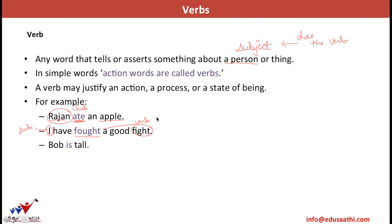As we just said, a verb may tell you or justify the state of being. For example, 'Bob is tall.' Bob is the subject because we are talking about Bob. Here we do not see any action taking place — Bob is not doing anything. But that does not mean we do not have any verb. The verb is 'is.' Why? Because 'is' justifies the state of being of Bob — that he is tall, his personal quality, his current status. So 'is' justifies the state of being of Bob and becomes the verb.